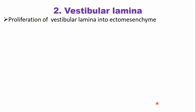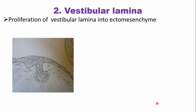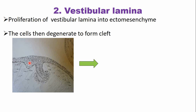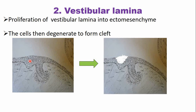Now the vestibular lamina. If you remember the structure of the oral cavity, there is a vestibule. Initially there is proliferation of the vestibular lamina into the ectomesenchyme — the cells proliferate and multiply. In the next stage, the cells degenerate to form a cleft, because there is a space between the dental arch and the buccal surface. This degeneration of cells leads to cleft formation. This degeneration is a programmed degeneration and we call it apoptosis. If it is a pathological degeneration, then we call it necrosis.